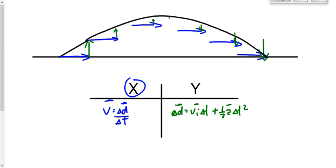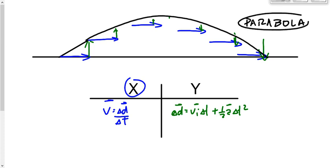The path ends up looking like this. Anybody know what the shape of that path is called? If you're taking Math 20, you're doing this right now in Math 20 — literally right now. It's a parabola. The general equation for a straight line is y = mx + b. The general equation for a parabola is y = ax² + bx + c.